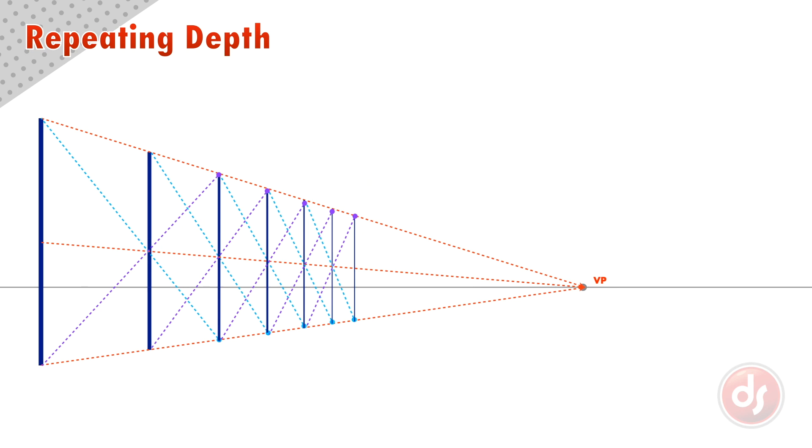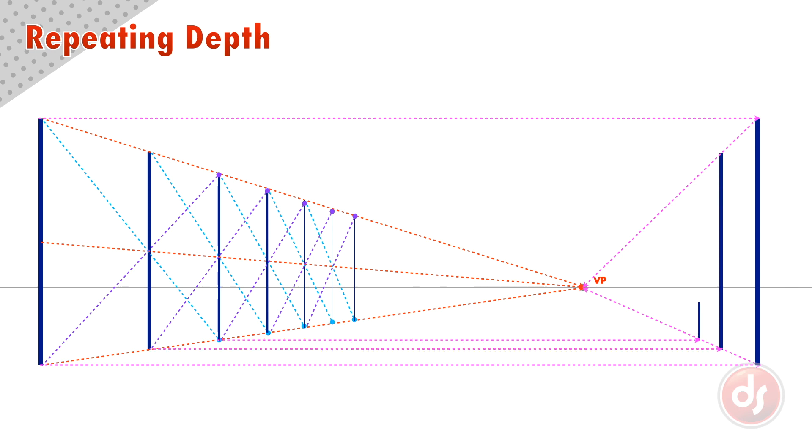If we want to mirror these same poles on the other side, we simply need to draw lines across on the x-axis to get the first pole, and then take that to the vanishing point. Each pole moving in space simply needs to be transferred over and fit inside the perspective lines on the new side.